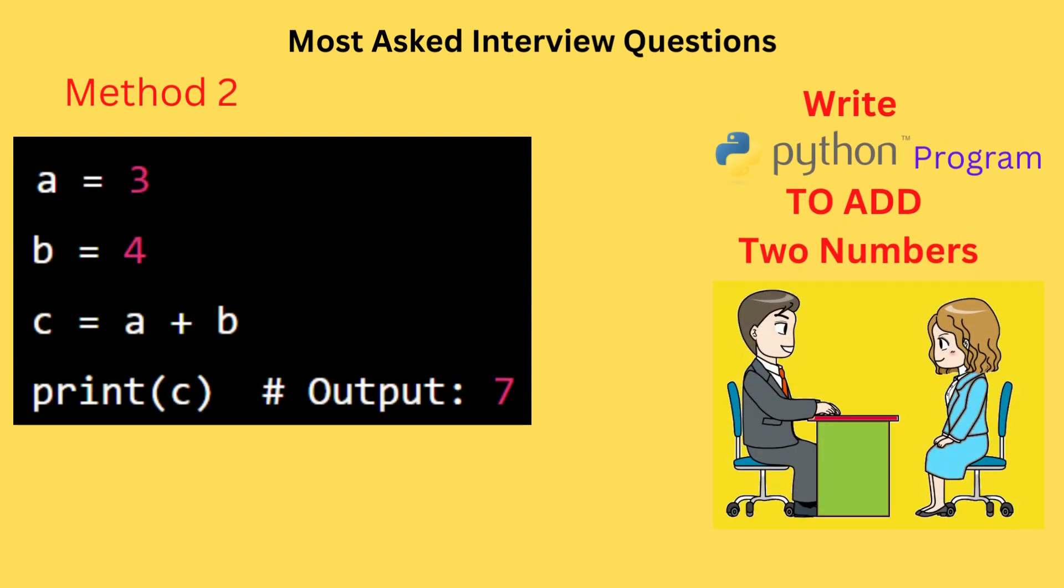You can also add two numbers using the plus operator directly. a = 3, b = 4, c = a + b, print(c) outputs 7.